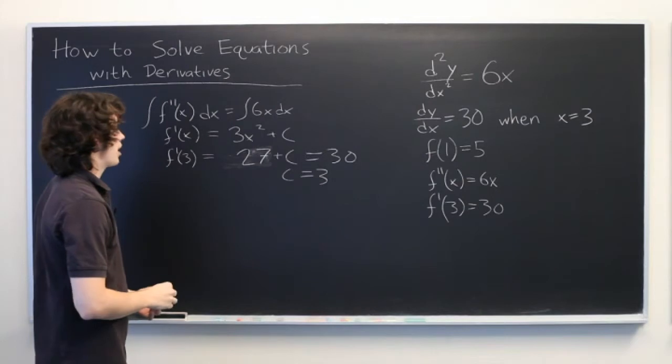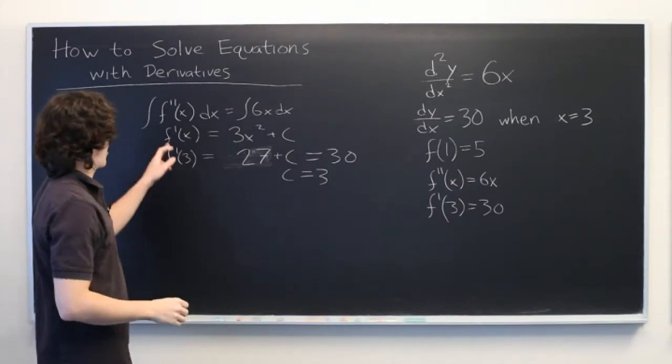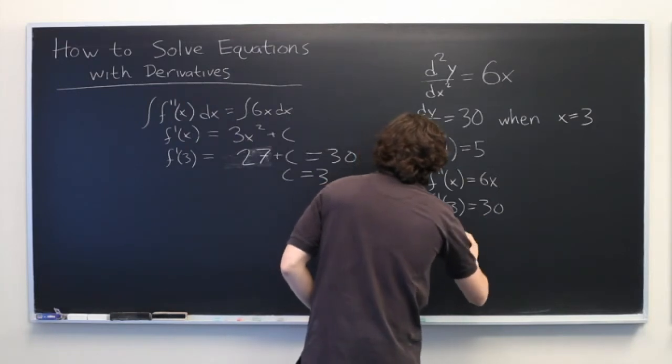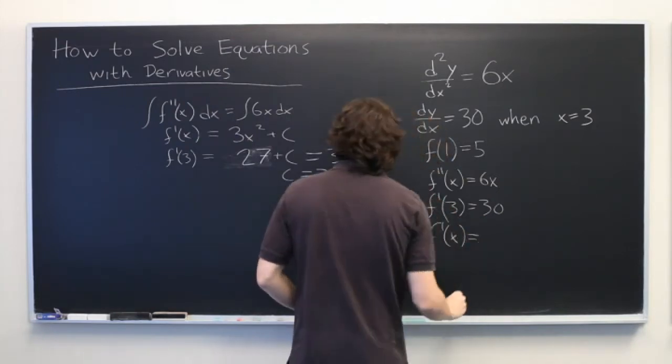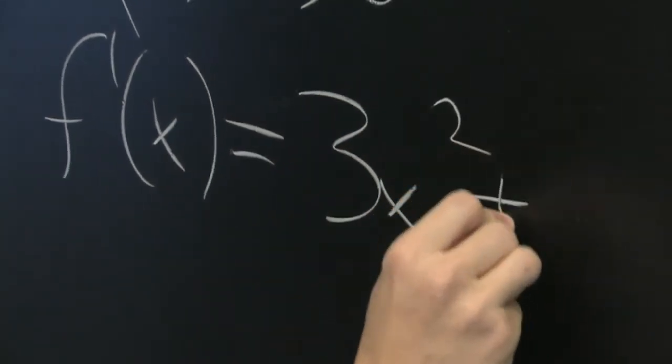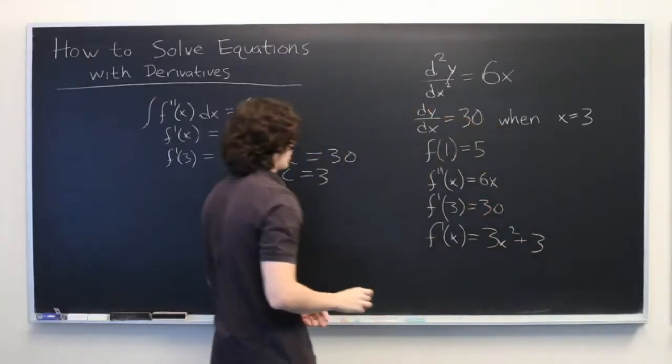Great. So, now we can unambiguously determine what f prime of x is. We'll write that over here. f prime of x is equal to 3x squared plus 3.